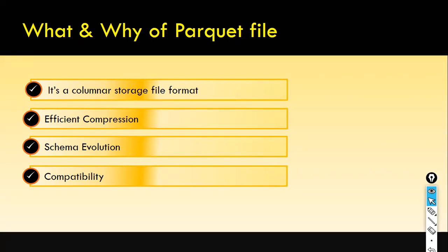For example, if you want to select values from just two columns, it goes to the appropriate column and fetches the data. Let me explain the difference between row-based and column-based. Why are columnar databases gaining a lot of popularity?